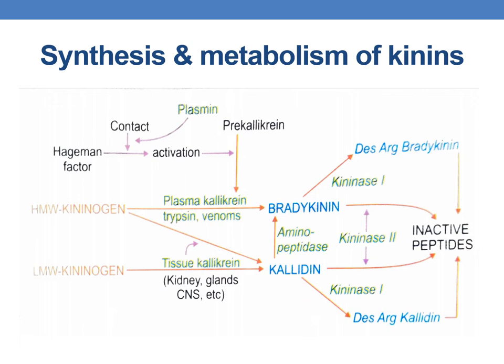Coming to the metabolism of kinins: they are rapidly degraded primarily in the lungs and the plasma half-life is usually less than a minute. The principal degrading enzyme is kininase 2, which is also called angiotensin converting enzyme (ACE), and it splits two amino acids from the carboxy terminal of the peptide chain. Another enzyme, carboxypeptidase, is kininase 1, and it removes only one amino acid producing selective B1 receptor agonist metabolites.